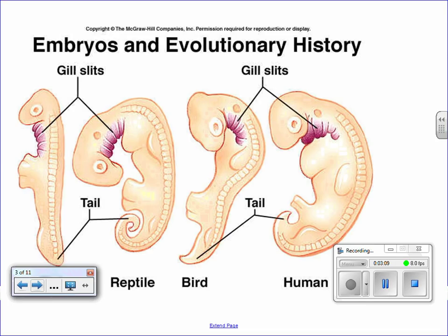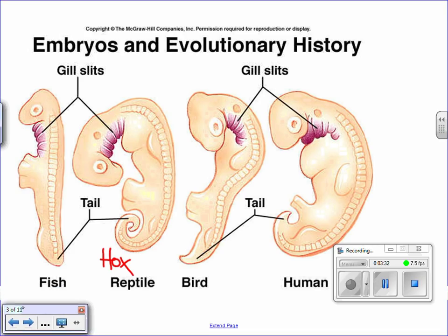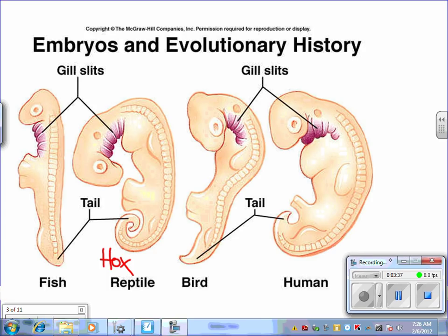Another piece of information that supports evolutionary theory is the analysis of embryos and development. Remember, this all codes down to the genes. If you remember any videos or your teacher talking about these controller genes called hox genes (H-O-X), these genes are controller genes that flip switches and turn things on during development.